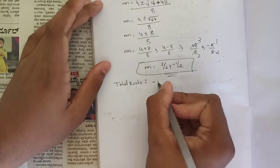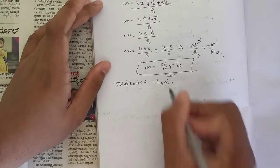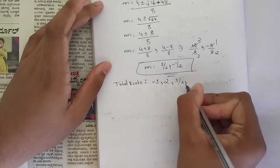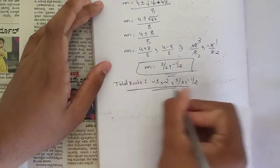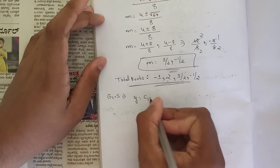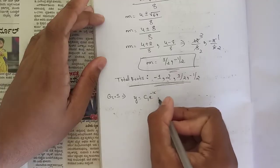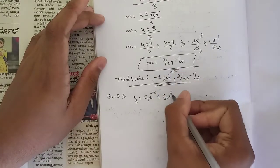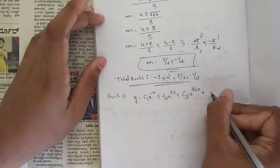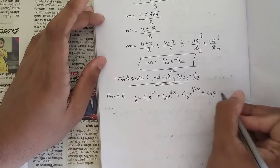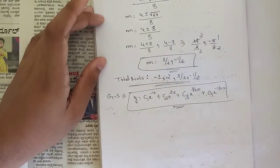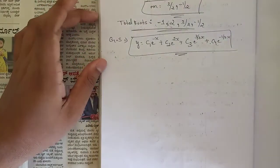The total roots are: m = −1, 2, 3/2, and −1/2. The general solution is: y = C₁e^(−x) + C₂e^(2x) + C₃e^(3x/2) + C₄e^(−x/2). This is the required general solution.